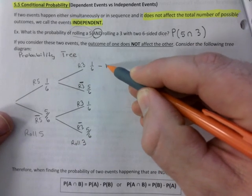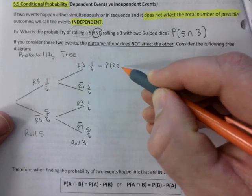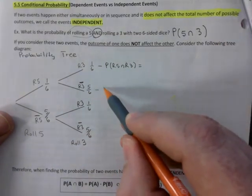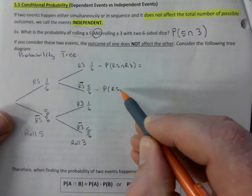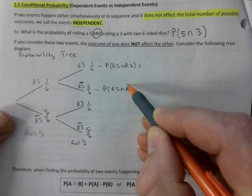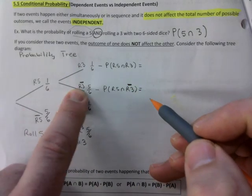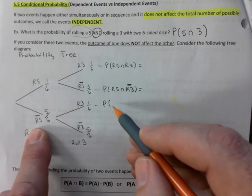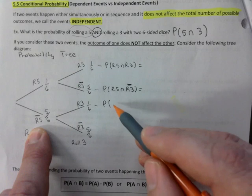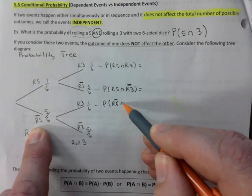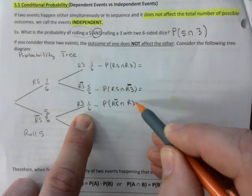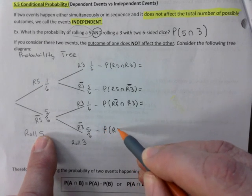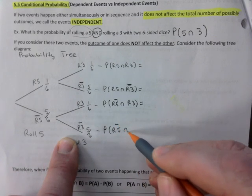So here's your probability tree. I want you to write this down though. This would be the probability of R5 and R3. We're gonna write down the numbers in a bit. This is probability of rolling a five and what's the next part? Not rolling a three, correct. We went down this branch here. Next probability, we're coming down this path here, correct. Not rolling a five and rolling a three. And last but not least, probability of not rolling a five and not rolling a three.